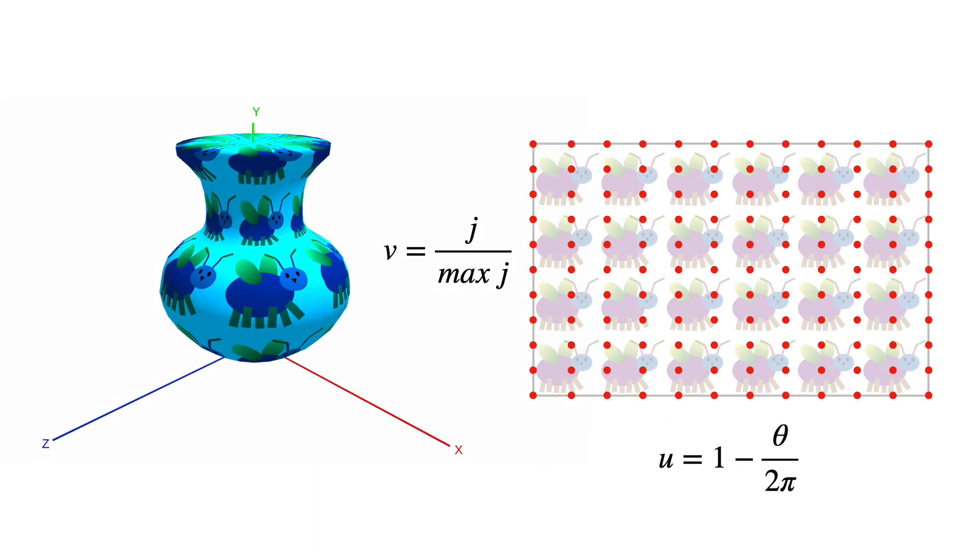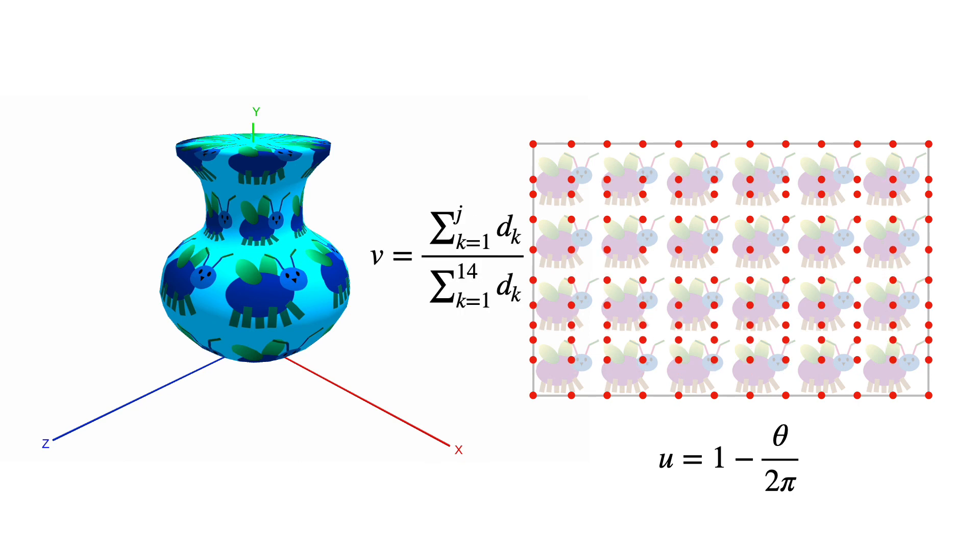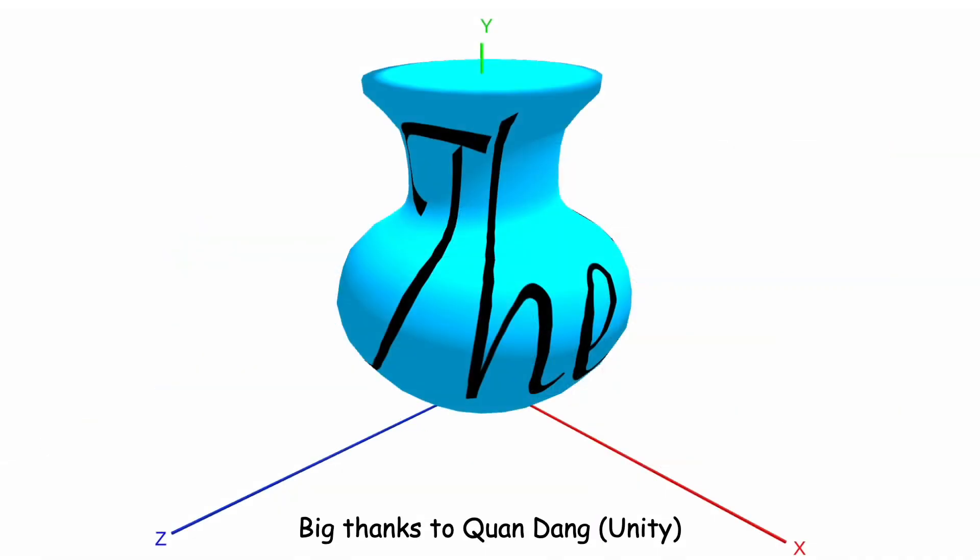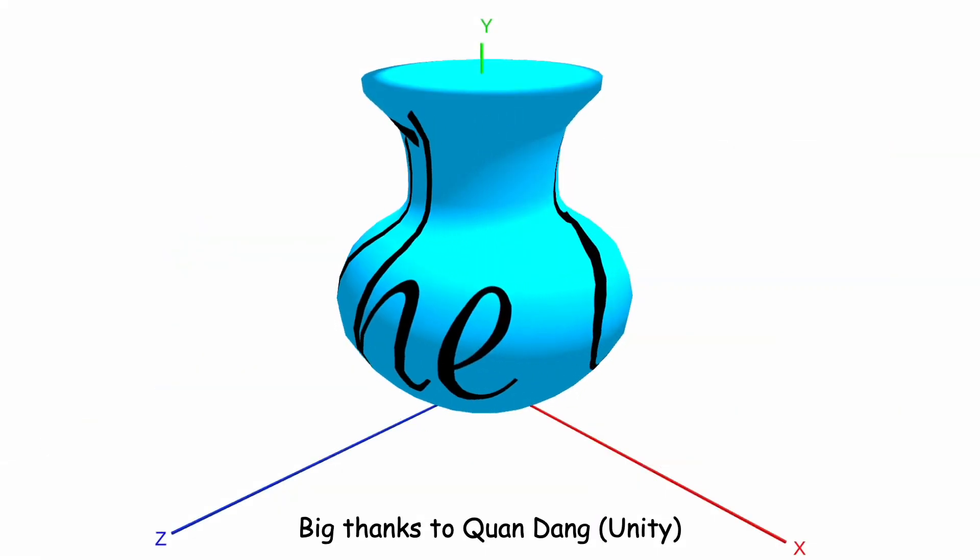When we apply these texture coordinates on the right, the vertical spacing changes, like this. And on the left, all of these bugs are now the same height. I hope you've enjoyed this video on meshes.